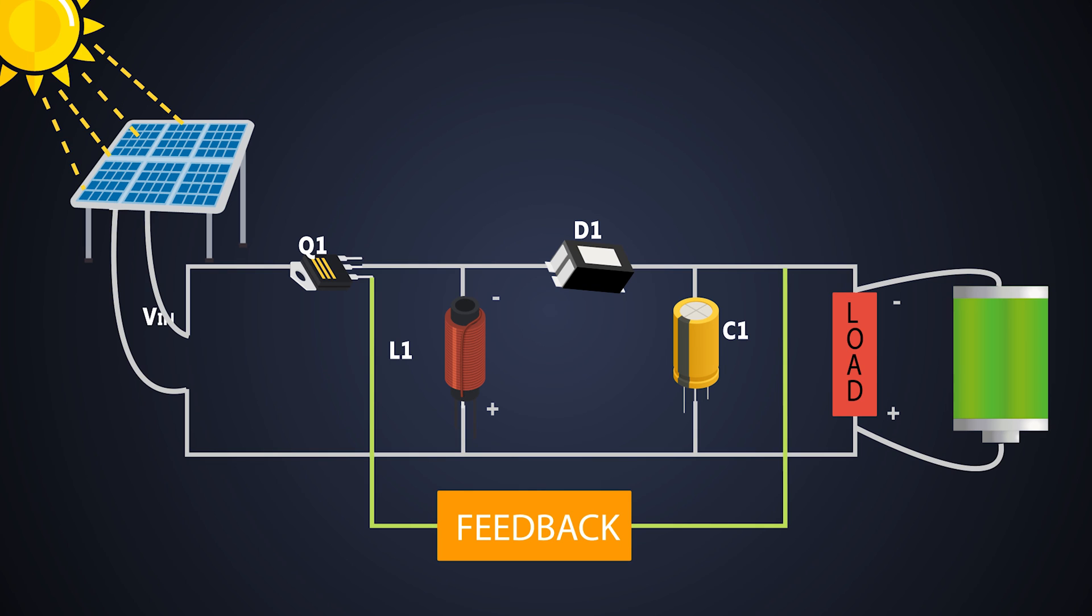If we take an example, the voltage of a solar panel can range from 10V to 18V. And from this solar panel, we need to charge a battery which has a nominal voltage of 12V. So to charge this battery, we need to step down the 18V to 12V and step up the 10V to 12V. So for this application, the buck-boost converter is an ideal choice.